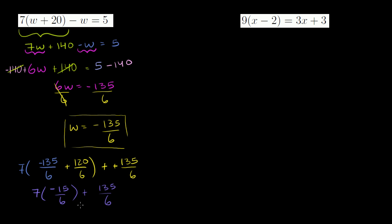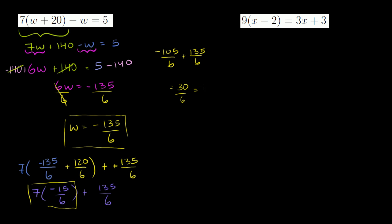Let's see what we get here. 7 times 15: that's 70 plus 35, so it's negative 105. So we have -105/6 plus 135/6. That becomes 30/6, which is equal to 5 — which is exactly what it needed to equal. It's equal to 5, so we got the right answer. We did it correctly, even though we got this strange-looking answer.